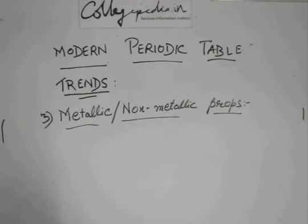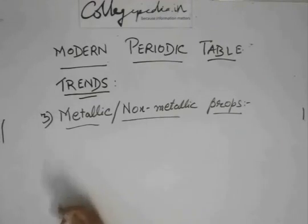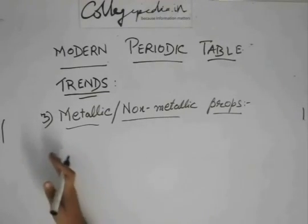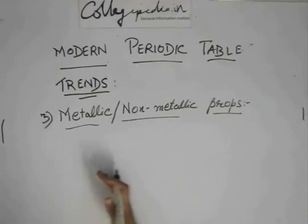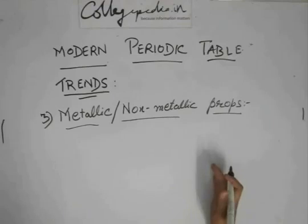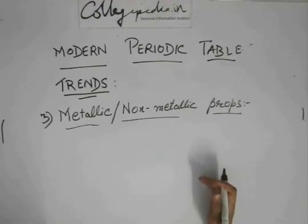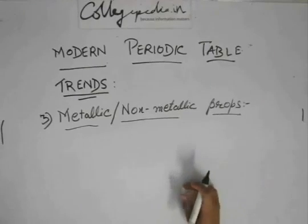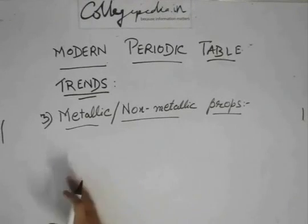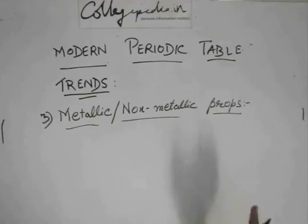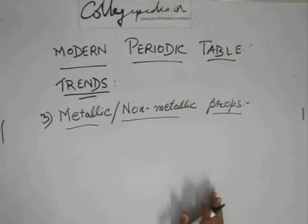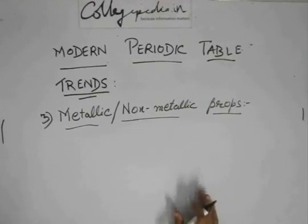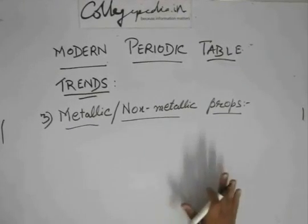Now, metallic and non-metallic properties — as we go towards the right of the periodic table, we will see that the non-metallic nature of the elements will increase.